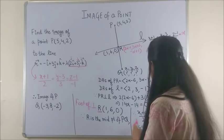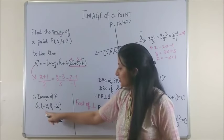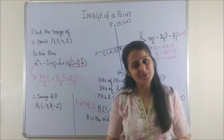And thus we conclude by saying therefore image of the given point P is given by Q which is (-3, 8, -2). Wasn't the procedure so simple?